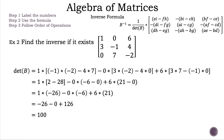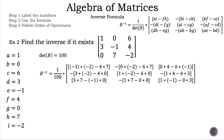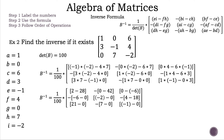Now that we have found our determinant, let's label our numbers. A=1, B=0, C=6, D=3, E=negative 1, F=4, G=0, H=7, and I=negative 2. Now let's substitute the determinant into the formula along with the numbers to the corresponding letters. Now let's simplify by multiplying inside the brackets, then subtracting inside the brackets and multiplying any negatives outside the brackets.